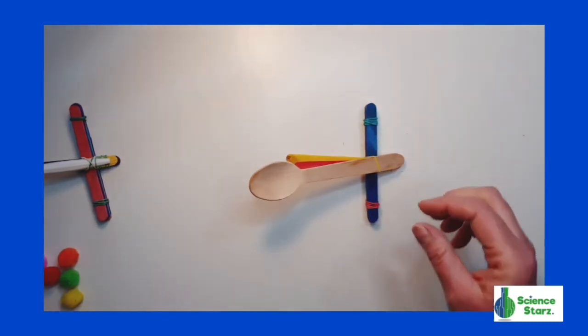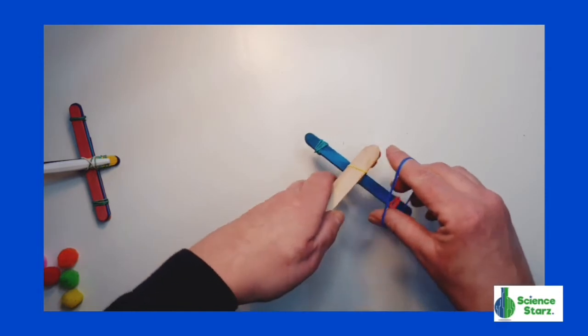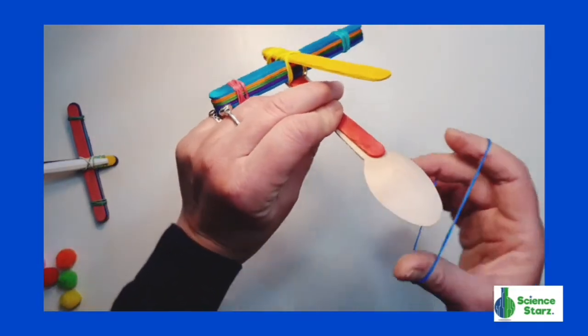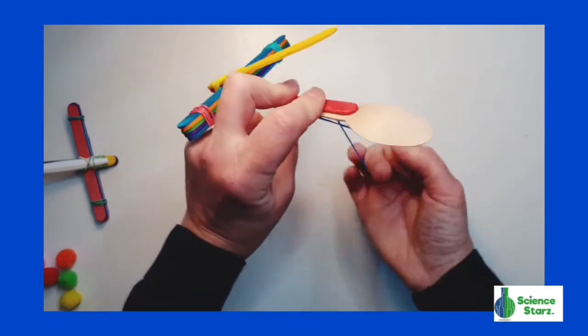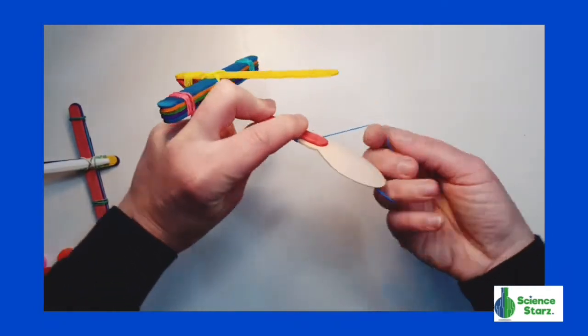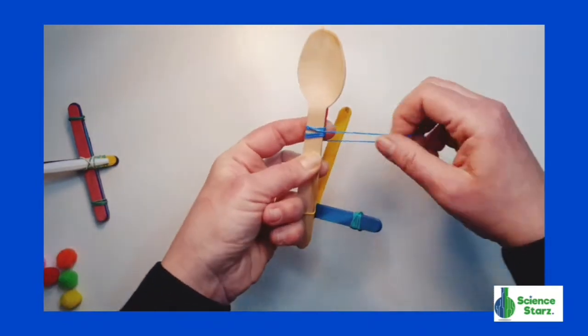Next we want to attach the spoon at the top. Take another elastic and wrap it around as many times as you can at the top to secure the lolly stick or the craft stick to the top bit of the spoon.